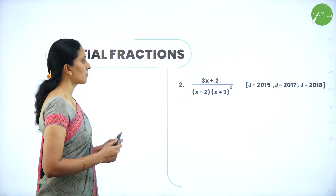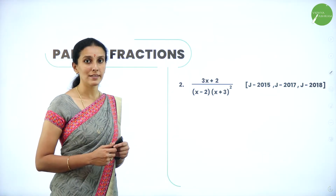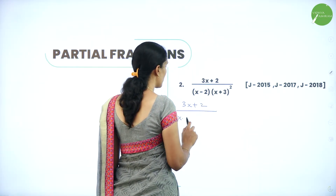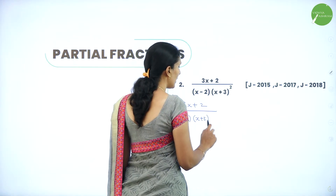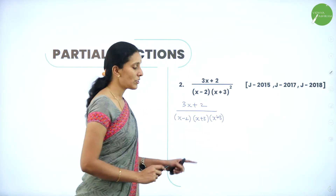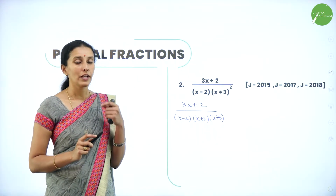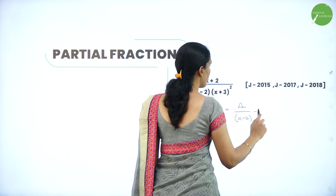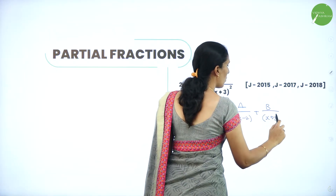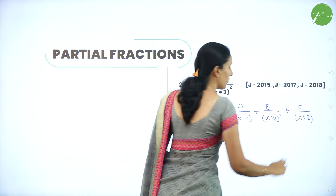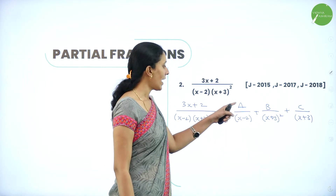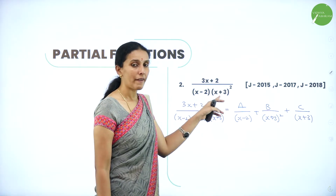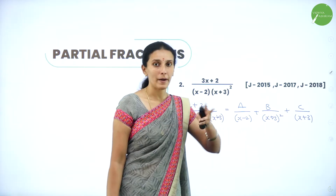The next question is (3x+2) divided by (x−2)(x+3)². Here (x+3)² means (x+3)(x+3), so we have a repeated linear factor. When you have a repeated linear factor, you write this in the form A/(x−2) plus B/(x+3)² plus C/(x+3). The non-repeated factor x−2 gives a single fraction, while the repeated factor (x+3)² must be expressed as the sum of two partial fractions.